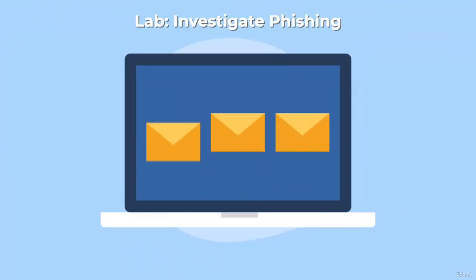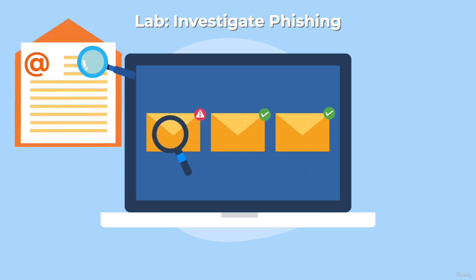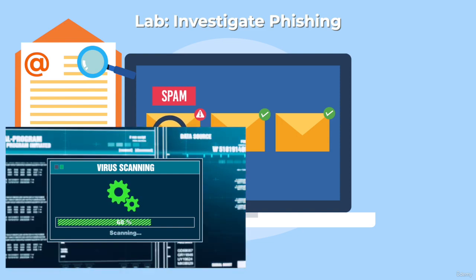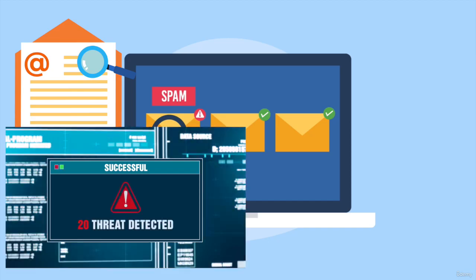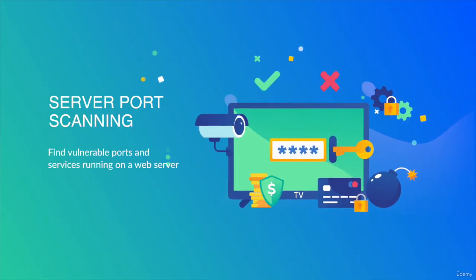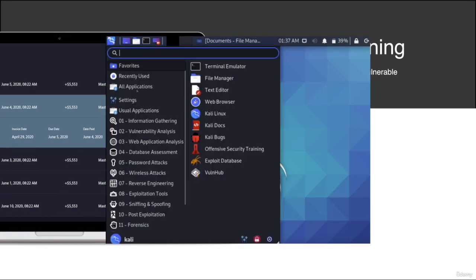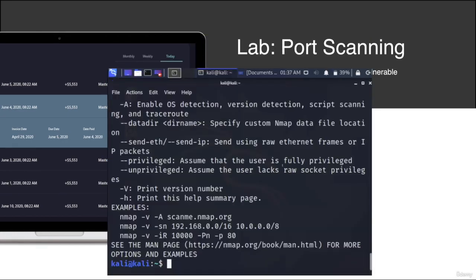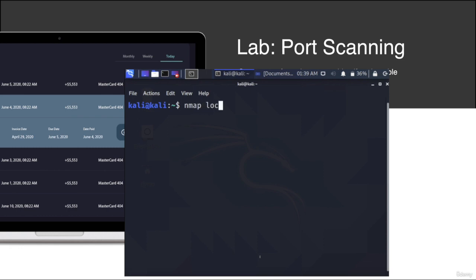Six practical hands-on labs are going to ensure that you have practical skills. For example, in the investigate phishing lab, you're going to vet emails and do a forensic analysis to identify whether an email or attachments are malicious or not — practical skills that you can list on your resume. You're also going to do port scanning of an active web server to identify vulnerable applications as well as open ports, which would help you assess the security of your web server and identify open ports or services that need to be mitigated.